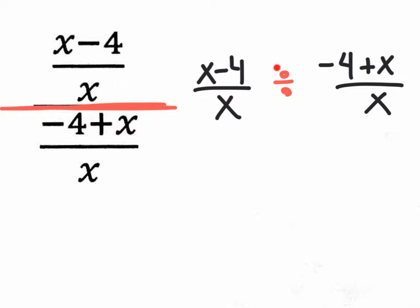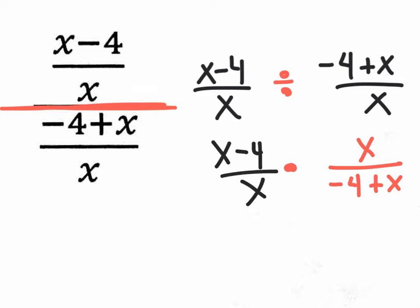After that, we're going to change the division to a multiplication. And of course, we're going to flip only the second fraction. So the x that was on the bottom is going to be on top. The minus 4 plus x that was on top is now going to be on the bottom. And that first fraction, we're just going to leave it exactly the same: x minus 4 over x.